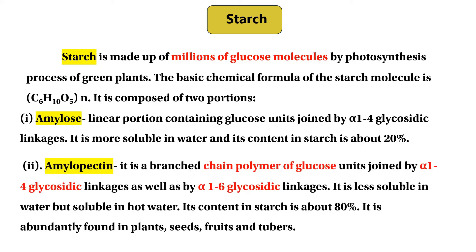Amylose is more soluble in water and it contains about 20% of the starch. Another one is amylopectin. Amylopectin is a branched chain polymer of glucose. In this case, glucose molecules are joined by alpha-1,4 glycosidic linkage as well as alpha-1,6 glycosidic linkage. You can add the 1,4 glycosidic linkage at carbon number 1 to carbon 6. Amylopectin is less soluble in water.